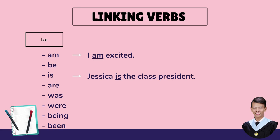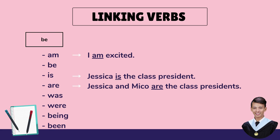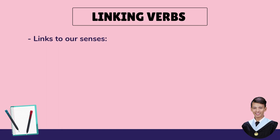Now, if we're talking about two or more persons, we need to use are — just like: Jessica and Miko are the class presidents. Now we have two subjects, Jessica and Miko. These are just some examples of the be verbs. We will make a separate video for the others.